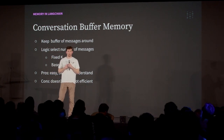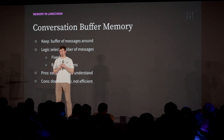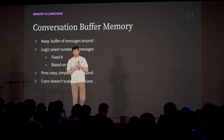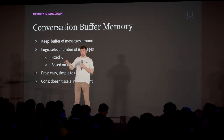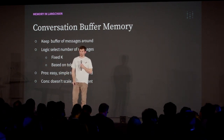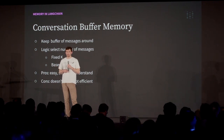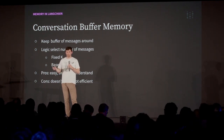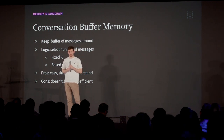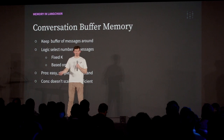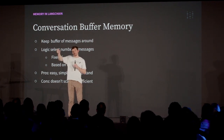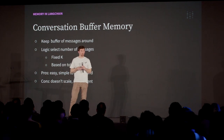I'll skim through some of the memory modules we have in LangChain. The simplest form is what we call conversation buffer memory. This keeps a buffer of previous chats and passes them back into the language model as context for what was said previously. There are different ways to select the number of messages you pass back in — the more you include, the more context it has, but it's also more costly, and at some point you'll run past the context window length. It's pretty simple and easy to understand, but you can't pass in everything, and that's not efficient for making generalizations.